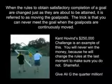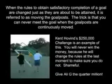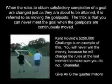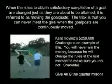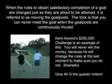Moving the goalposts. When the rules to obtain satisfactory completion of a goal are changed just as they are about to be attained, it is referred to as moving the goalposts. The trick is that you can never meet the goal when the goalposts are continuously moved. Kent Hovind's quarter-million-dollar challenge is an example of this. You will never win the money because he will change the rules at the last moment to make sure you do not. It is shameful.